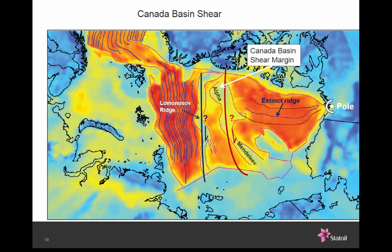Let's have a look at the Canada Basin Shear — where did it go and how did it work? The pole of rotation is in the Mackenzie Delta, rotating counterclockwise. The extinct ridge can be seen on gravity inversion going about as far as here, but you can't really push it any further. Most of the literature places the shear margin along the Lomonosov Ridge, but I think you'll appreciate that doesn't really fit with high-angle rotation in a confined space — it's rather straight and makes all kinds of plate tectonic problems.